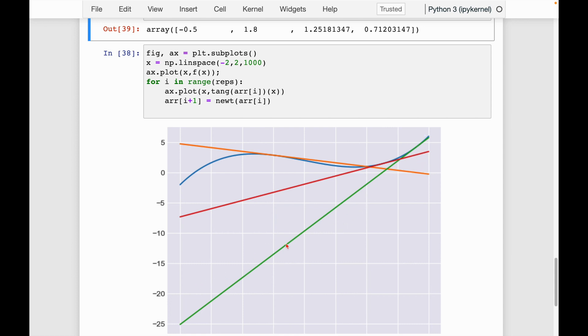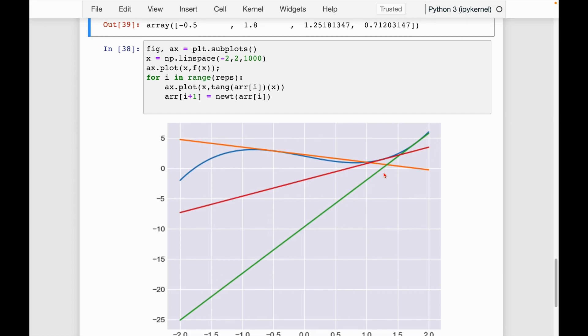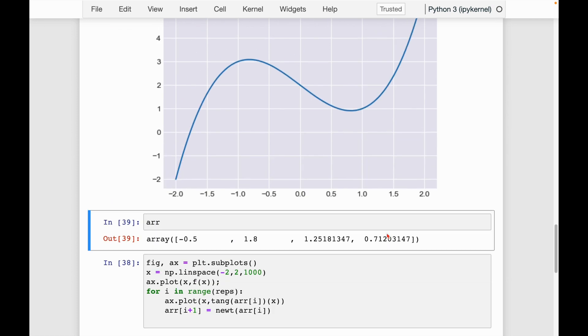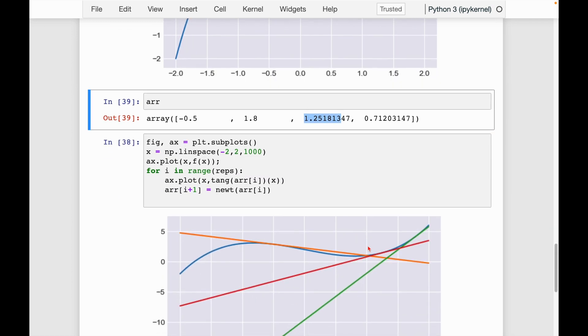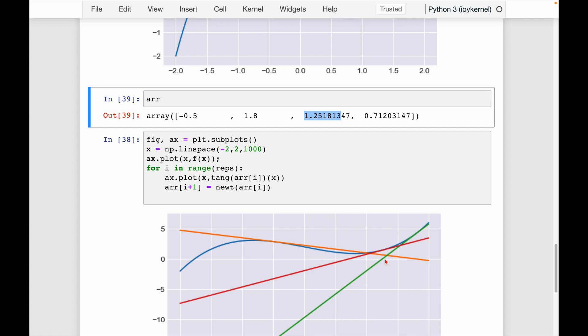Then we draw the line tangent to the function at 1.8. So that's this green line here. Where does the green line cross the x-axis? It's around this point here. So that's in between 1 and 1.5. So here we get 1.25. And then if we go one more time,